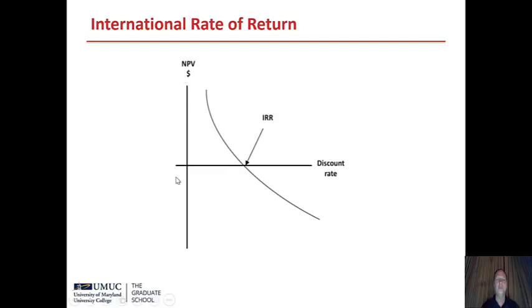A graph of net present value versus discount rate shows the point at which the internal rate of return drives the NPV to zero. If the discount rate is below the IRR, the NPV is positive. If the discount rate is above the IRR, the NPV is negative. This is for a simple IRR with only one crossing point. In more complex equations, you can end up with multiple crossing points, in which case the IRR calculation does not work properly and you have to use the MIRR — the modified internal rate of return.